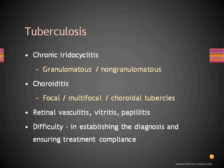Tuberculosis can present in any part of the uveal tract as inflammation. One could have iridocyclitis — this could be chronic, which is more common, but could also be an acute iridocyclitis. It could present as a granulomatous iridocyclitis or even non-granulomatous, like in this patient. Choroiditis is another common presentation of tuberculosis, and it could be focal, multifocal, or present as multiple choroidal tubercles.